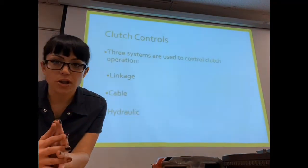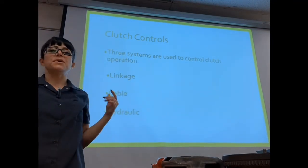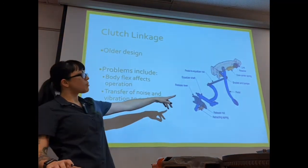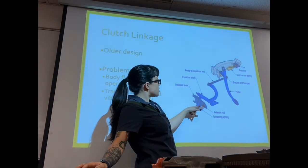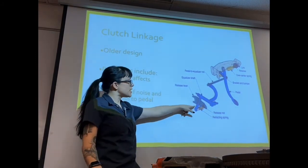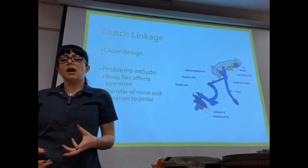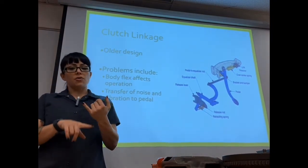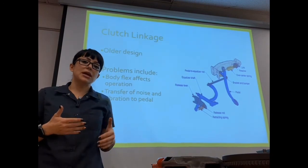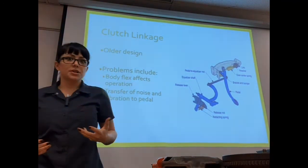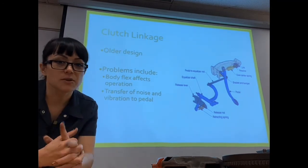There are three main ways to control your clutch, and it's really a timeline. The first way is a linkage design — every time you press in the clutch pedal, you're pressing in on an equalizer rod or linkage assembly, which transfers movement to your release fork. It's a very simplistic design, but there's a lot of noise and vibration involved. In a body-over-frame design, you can actually get flex of the body if your body bushings are bad — every time you press the clutch, that side of the body might go up. This is a much older design that we stopped using a long time ago.